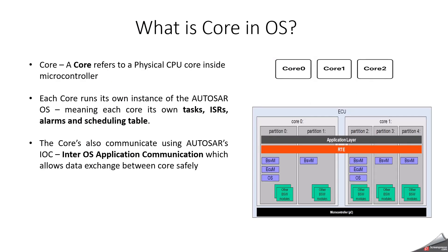What is a core in the operating system? A core in Autosar refers to a CPU core — that means a processor core within a multi-core microcontroller. Each core can independently execute its own set of tasks, ISRs and applications, but they share the same hardware, meaning memory and peripherals. For example, if you are using Tricore RH850 TC39 in your project, it has 3 cores: Core 0, Core 1 and Core 2.